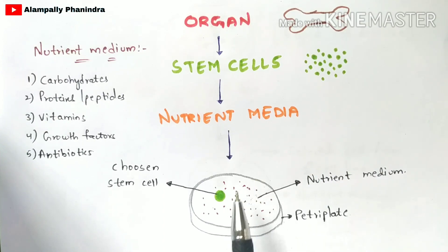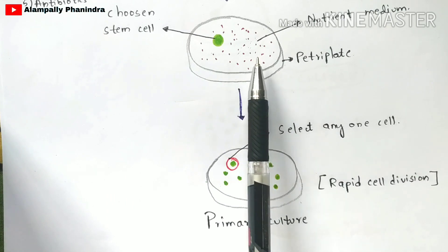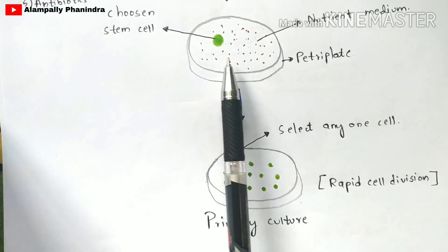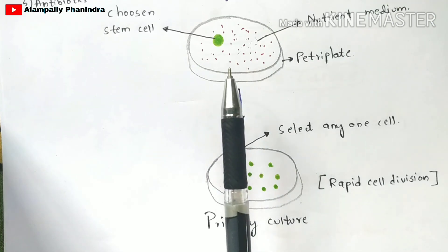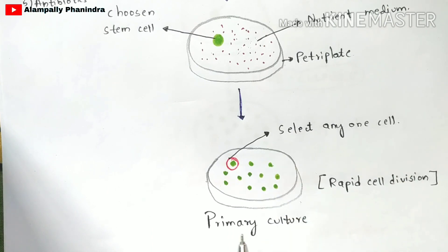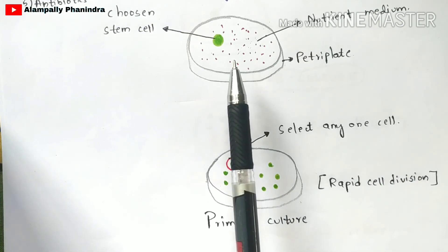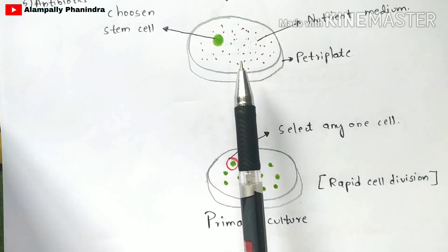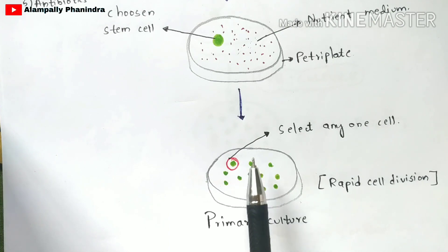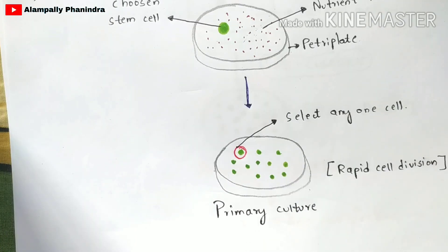That selected stem cell is placed in the petri plate containing nutrient medium and incubated. After incubation, the cell undergoes division using the nutrient medium — this is called proliferation or cell division. Once division occurs, this is called primary culture. The nutrient medium will be absent after this step because the stem cell has consumed all the nutrients for the division process.